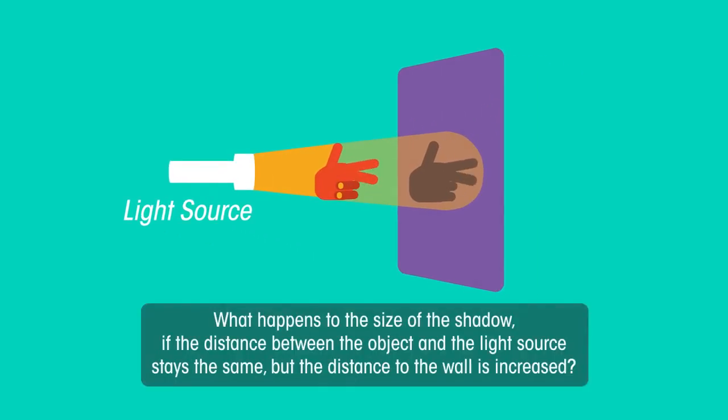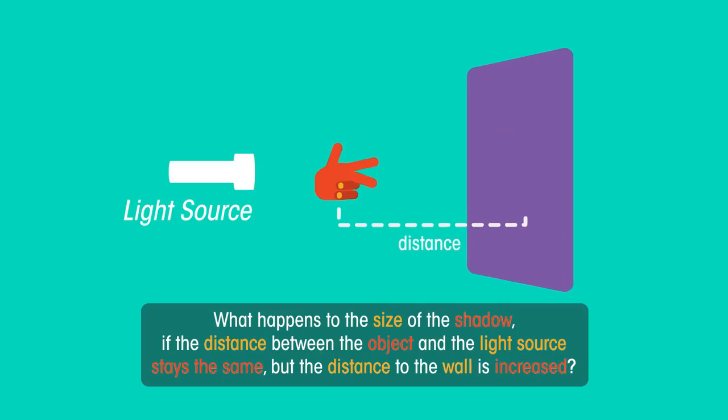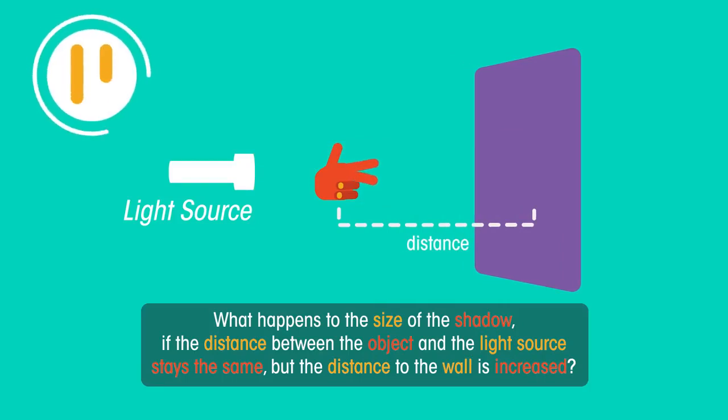What happens to the size of the shadow if the distance between the object and the light source stays the same, but the distance to the wall is increased? Pause the video and have a think.